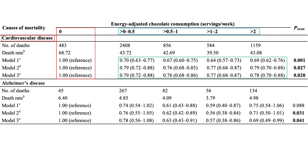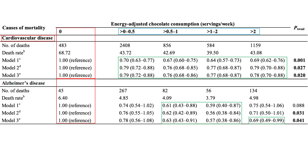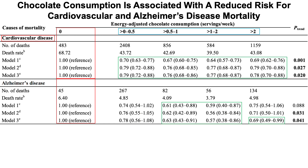Similarly, Alzheimer's disease mortality risk was also reduced for people who consumed more chocolate than none. Half a serving up to two servings per week, regardless of the model, was associated with significantly reduced Alzheimer's disease mortality risk. For more than two servings per week, models one and two weren't significant, but the fully adjusted model three was statistically significant. Note that up to half a serving per week was not significantly different from no chocolate. So chocolate consumption is significantly associated with reduced risk for both cardiovascular and Alzheimer's disease mortality.